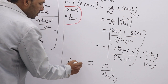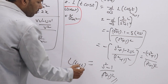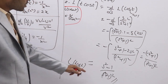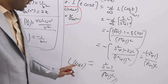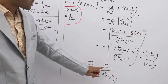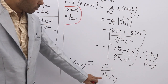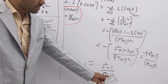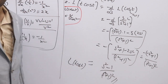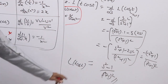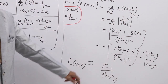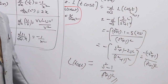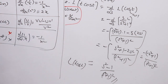For L{t·cos(t)} with a = 1, the answer is (s²-1)/(s²+1)². If a = 2, you get (s²-4)/(s²+4)². One can easily guess the answer using this pattern for multiplication by t with cosine.